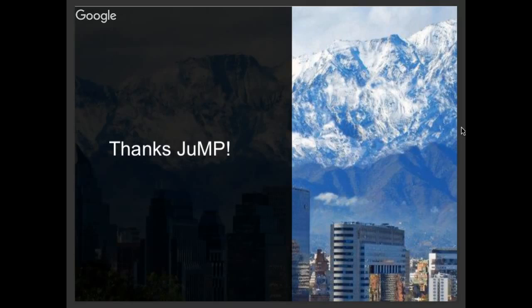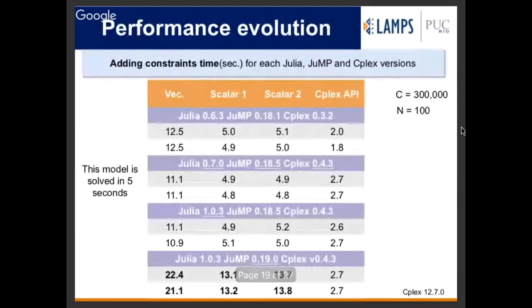I did some changes yesterday but will refresh the code and post it in the issue. There was a question about the CPLEX version — yes, there was about a 30% increase there, and I'm not sure exactly what caused it.